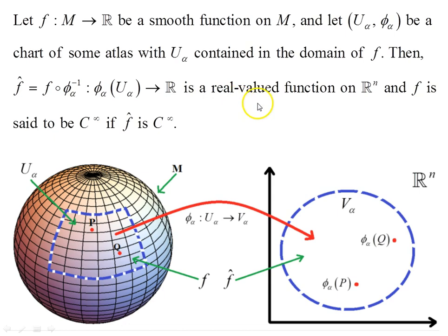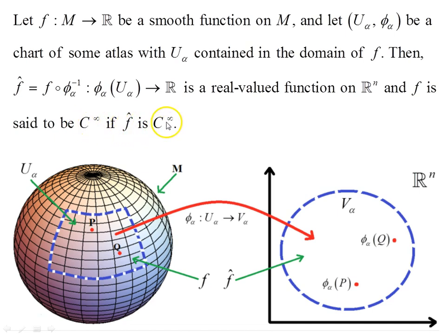f-hat is a real-valued function on R^n, and f is said to be of the class of infinitely many times differentiable functions if f-hat is also of the same class. So f-hat is defined on the Euclidean space and f is defined on the manifold.